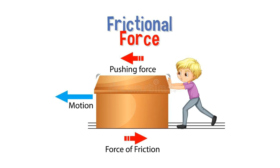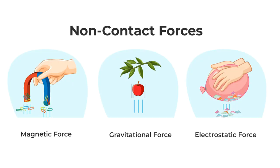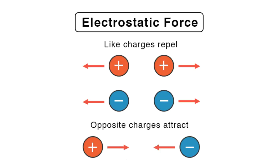Contact forces must touch to act — for example, friction requires the box to touch the floor, and air resistance requires the parachute to touch the air. Non-contact forces have three main types: magnetism, gravitational force, and the electrostatic force. Magnetism is in Topic 7; the electrostatic force appears in Topic 2 and Topic 4.